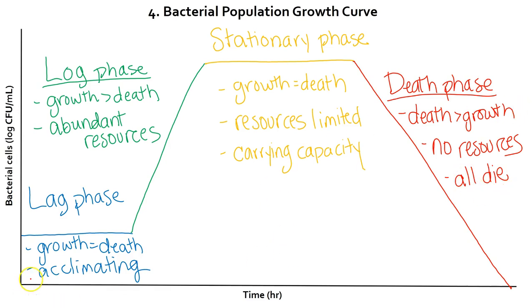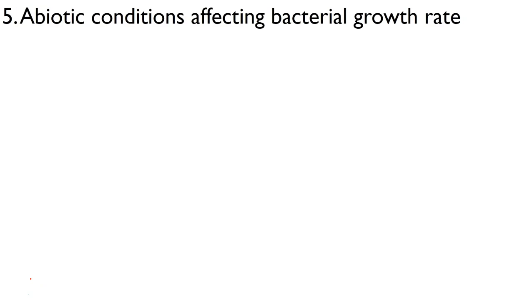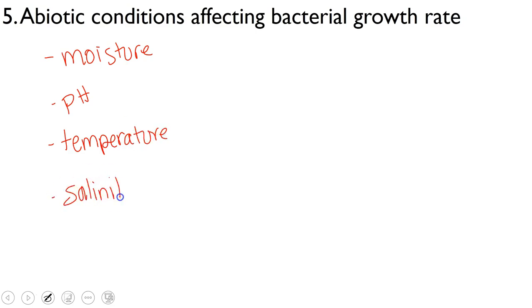So our last slide then is about the abiotic conditions affecting the bacterial growth rate or how fast they divide. So things that can affect bacterial growth rate include moisture, pH, temperature, salinity, air, and by that we mean the amount, the type, and the quality, and nutrients, the amount, the type, and the quality as well as light. So all of those can affect how fast our bacteria reproduce.